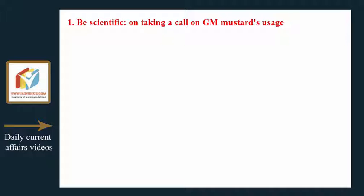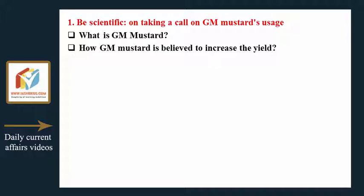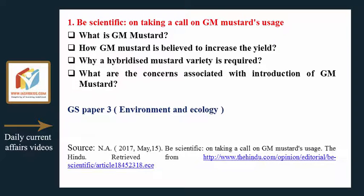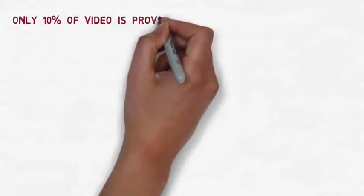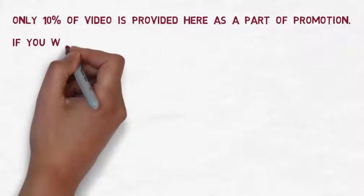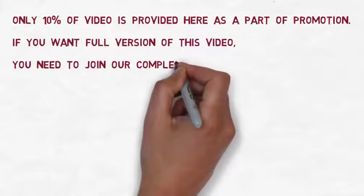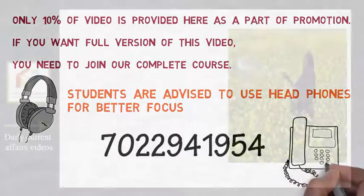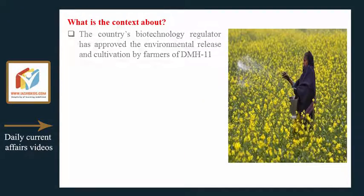Today we take a scientific look at GM mustard — what it is, how it is believed to increase yield, why a hybridized mustard variety is required, and what concerns are associated with its introduction. This topic falls under GS Paper 3: Environment and Ecology. The context is that India's biotechnology regulator has approved the environmental release and cultivation by farmers of DMH-11.